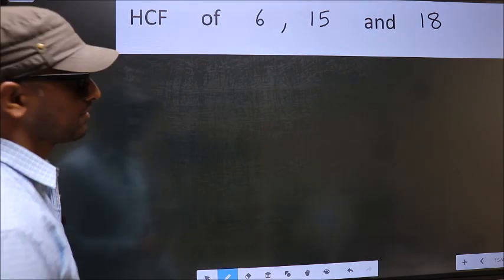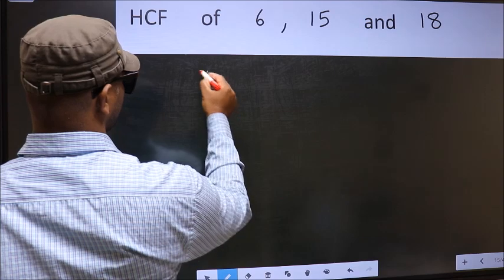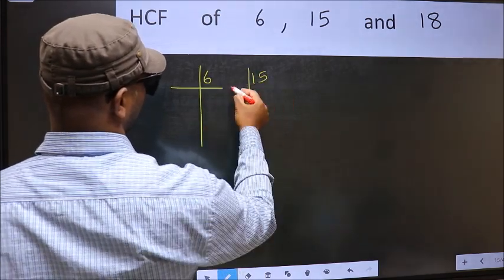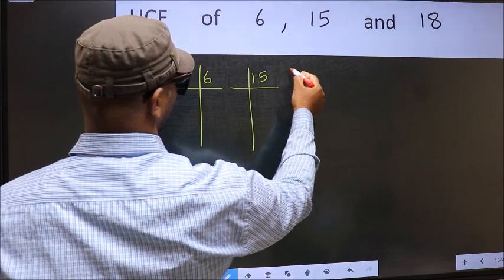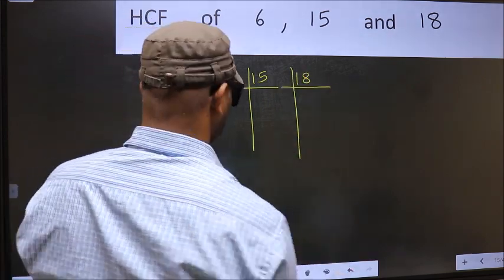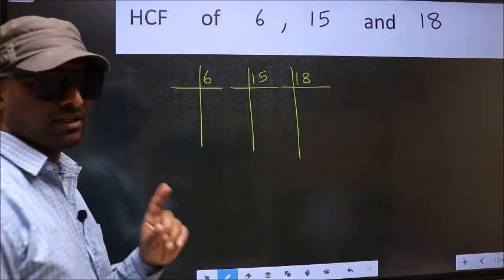What I mean is 6, 15, 18. This is your step 1.